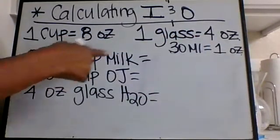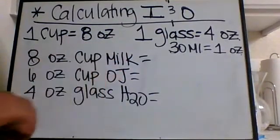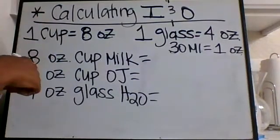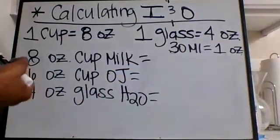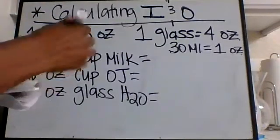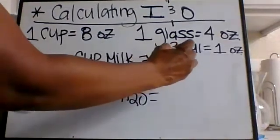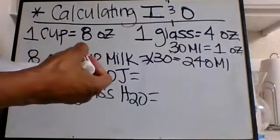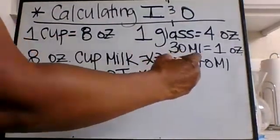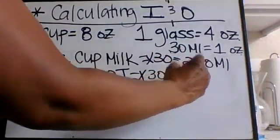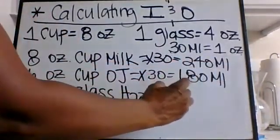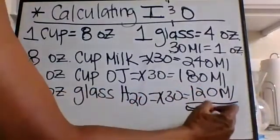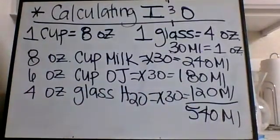The patient drank an eight-ounce cup of milk, a six-ounce cup of orange juice, and four ounces of water. We take the eight and multiply it by 30 — since 30 milliliters equals one ounce — giving us 240 milliliters. Six times 30 gives 180 milliliters, and four times 30 gives 120 milliliters. We add these up and the total is 540 milliliters, which is what the patient drank during breakfast.